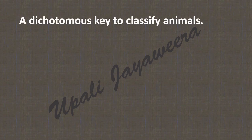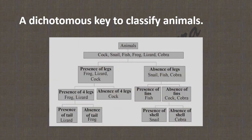Here is a dichotomous key to classify animals: cock, snail, fish, frog, lizard, and cobra. First classify into two groups — presence of legs: frog, lizard, and cock; absence of legs: snail, fish, and cobra. Those with legs are further divided by presence of forelegs: frog and lizard have forelegs; cock does not. Those with forelegs are divided by presence of a tail: lizard has a tail, frog does not.